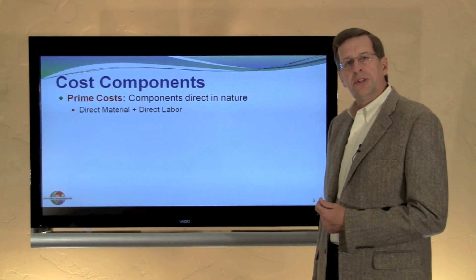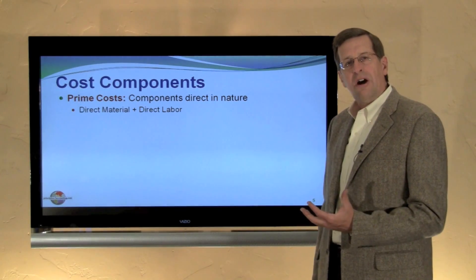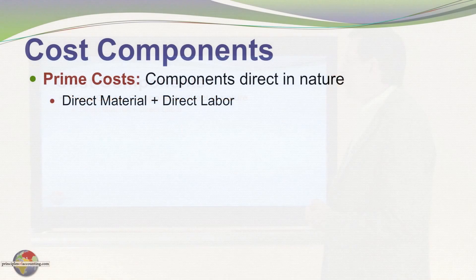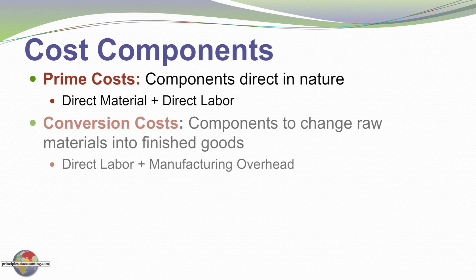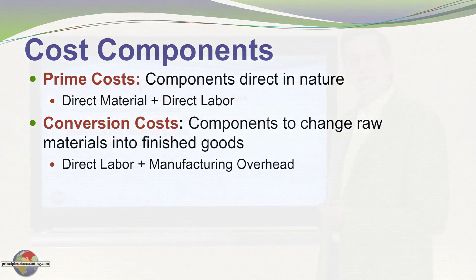Sometimes terms are used to describe these costs when they are grouped together. For example, the term prime cost is meant to refer to direct material and direct labor. Another term that's often used is conversion cost — those are the costs that are necessary to change raw materials into finished goods, and that would consist of direct labor and manufacturing overhead.